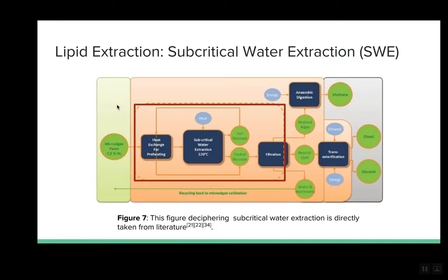Subcritical water extraction is a wet biomass conversion process carried out at high temperatures and high pressures. The dielectric constant of water is lower at subcritical conditions and becomes more miscible with lipids. The process produces liquid bio-crude as the main product. It is commonly used for dilute microalgae paste because it requires a lot of water. This method has been proven at industrial scale, converting fats and carbohydrates to oils with a high extraction yield ranging from 77% to 90%. To be energy-efficient, it requires a heat exchange network so energy from hot liquid streams can be recycled.